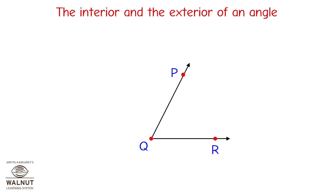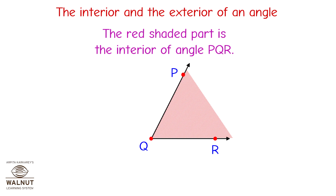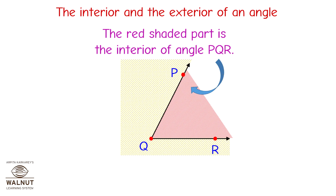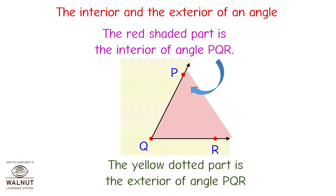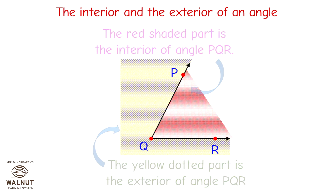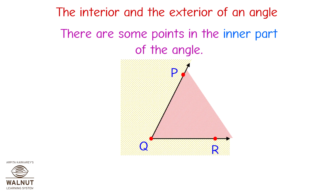The interior and the exterior of an angle. Look at angle PQR: ray QP and ray QR form the angle PQR. The inner part of an angle is called the interior of an angle — the red shaded part is the interior of angle PQR. The outer part of an angle is the exterior of an angle — the yellow dotted part is the exterior of angle PQR.